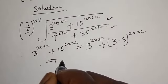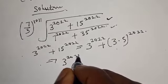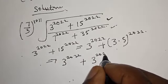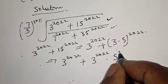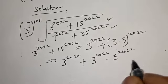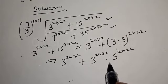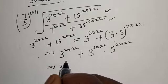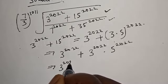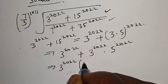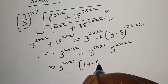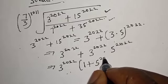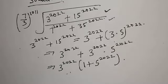15 raised to power 2022 is equal to 3 raised to power 2022 plus 3 raised to power 2022 multiplied by 5 raised to power 2022. Since 3 raised to power 2022 is common, we factor it out: 3 raised to power 2022 multiplied by 1 plus 5 raised to power 2022.